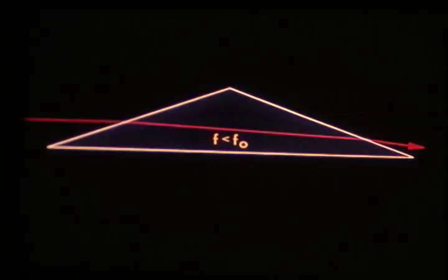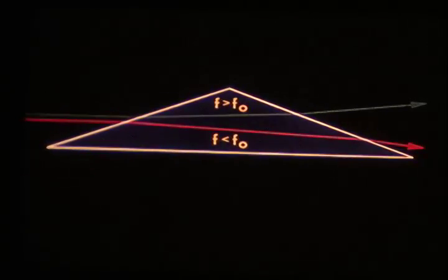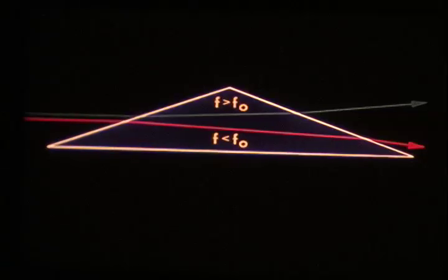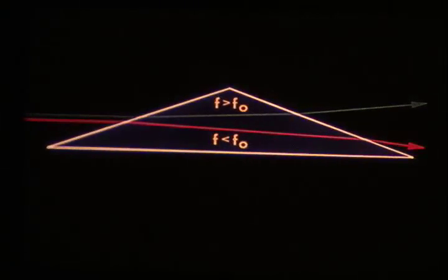The frequencies of light on the blue side of yellow lie above the resonance. Green light will be refracted upward by a prism whose material resonates in the yellow. Its phase velocity is larger than C in the material.